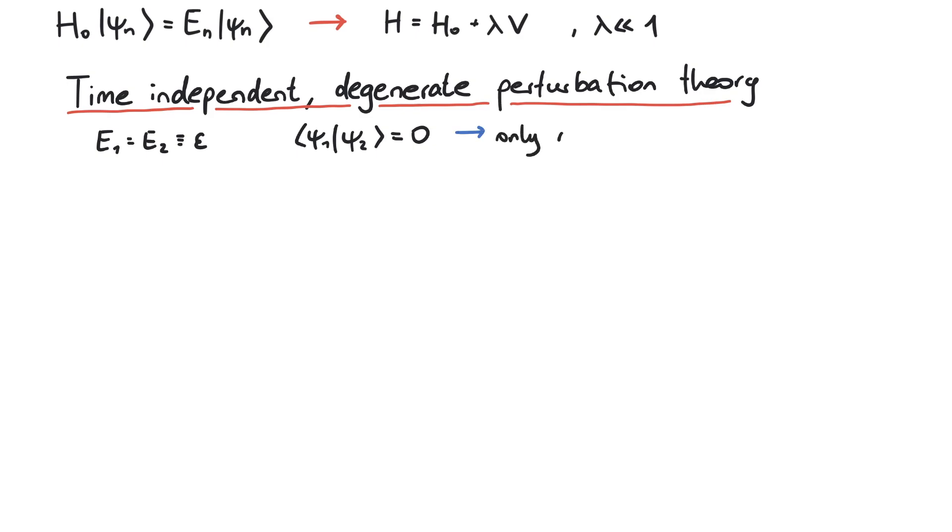For psi1 and psi2, we only consider the subspace of the new potential v spanned by these two functions. For example, if the diagonalized Hamiltonian can be written as 0, epsilon, epsilon, epsilon, 3 epsilon, we see that the eigenvalues are 0, epsilon, and 3 epsilon.